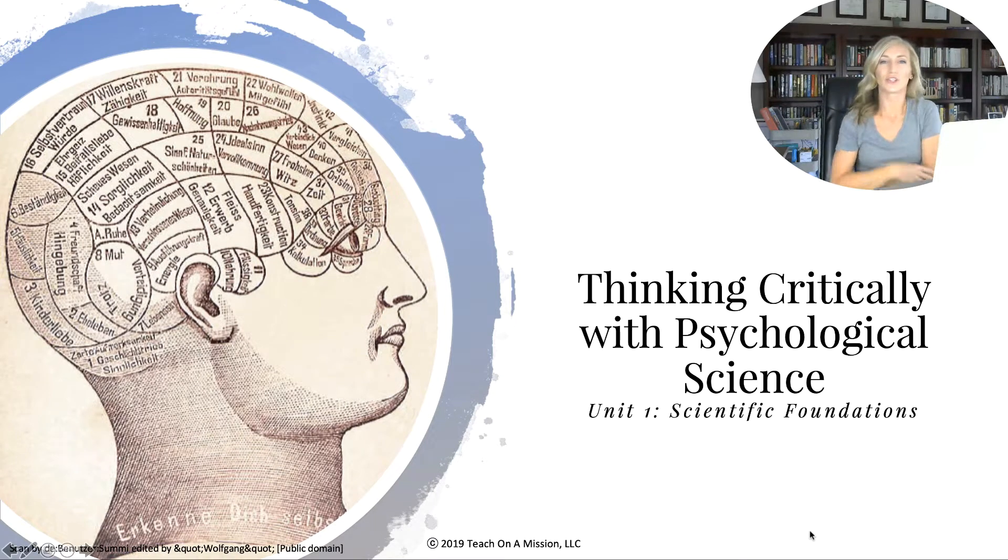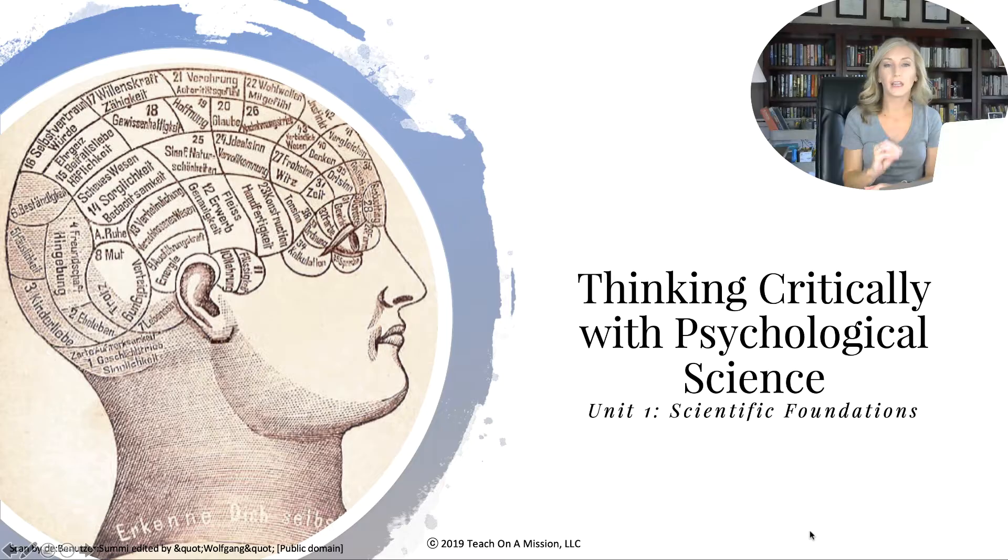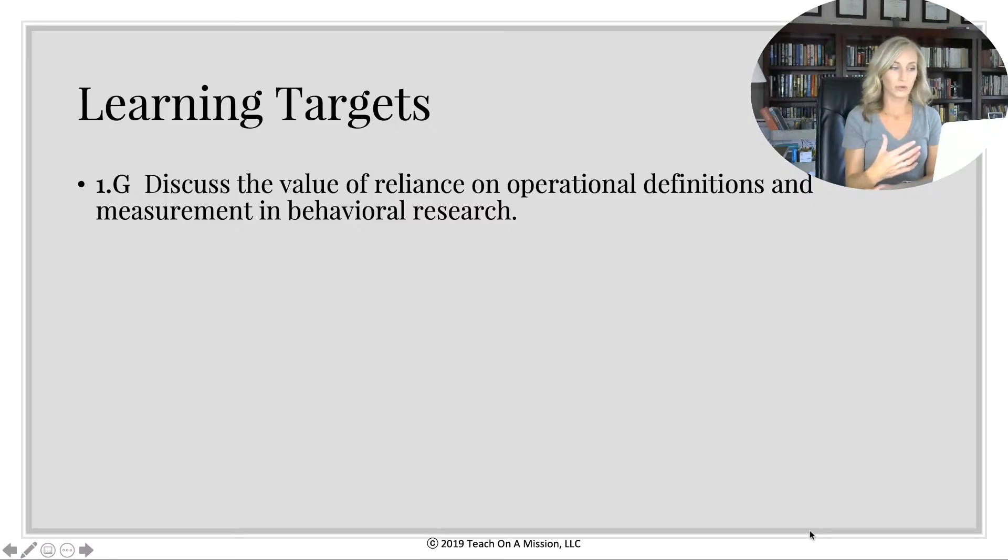Hi and welcome back to the first unit of AP Psychology. This is the second set of notes that you'll want to make sure you've grabbed either from your teacher or from my Teachers Pay Teachers store, which is linked below this video. In this video we're talking about thinking critically with psychological science and really what that looks like. We're going to discuss the value of reliance on operational definitions and measurement in behavioral research in general. So hang tight and let's get started.